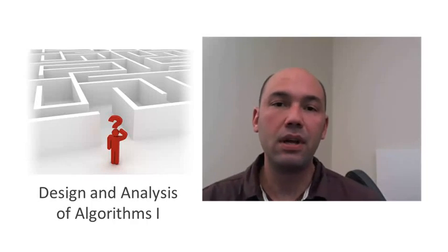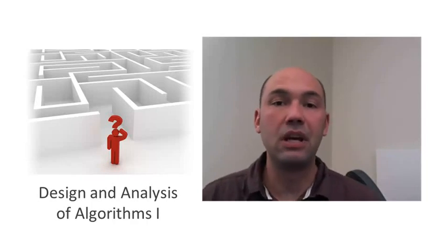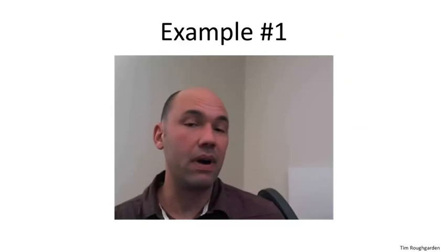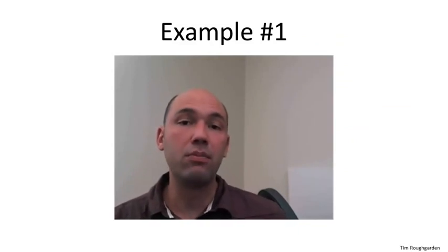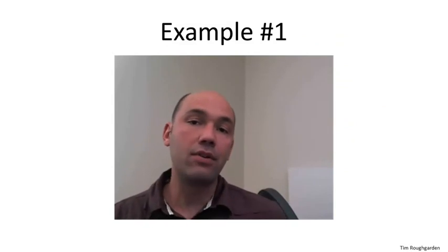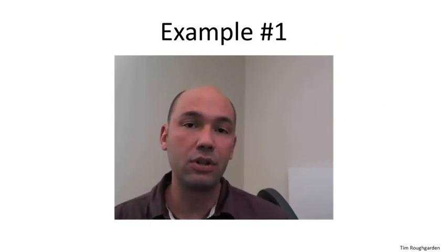Having slogged through the formal definition of big O notation, I want to quickly turn to a couple of examples. I want to warn you up front, these are pretty basic examples. They're not really going to provide us with any insight that we don't already have, but they serve as a sanity check that big O notation is doing what its intended purpose is, namely to suppress constant factors and lower order terms. Obviously these simple examples will also give us some facility with the definition.